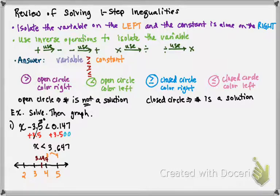Now, I have less than, so I'm going to put it over here. So that means open and left. So I have an open circle at that 3.647 and I color left.